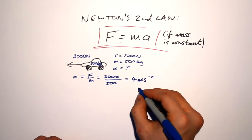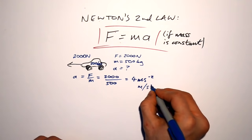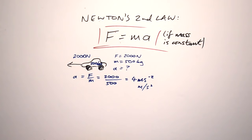GCSE people, you can write it like this. You should be writing it like that. That's the A-level way. That's the GCSE way of writing meter per second squared. So that's nice and easy.